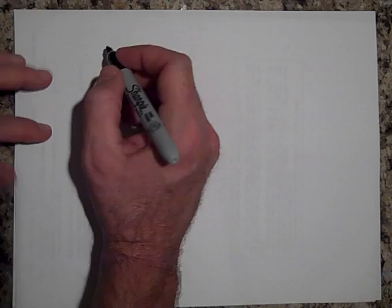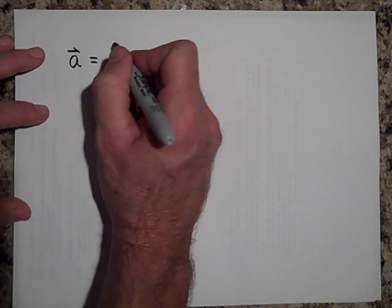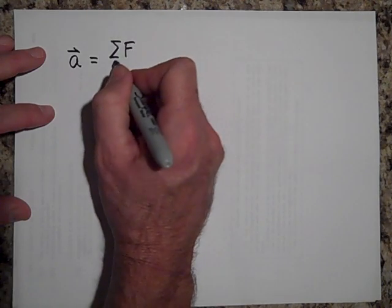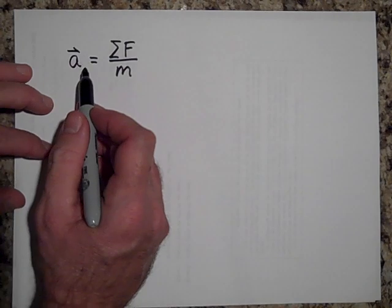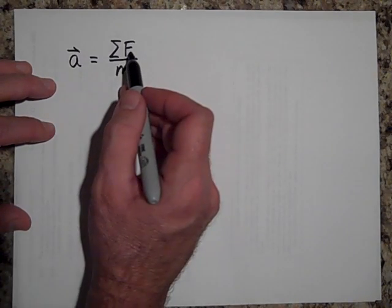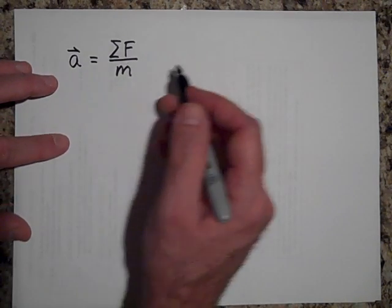To do that, I want to go back to Newton's laws for linear motion. Newton's second law for linear motion says A is equal to the net force on the object divided by the mass of the object. So the acceleration of an object is equal to the net force on the object divided by the mass of the object.